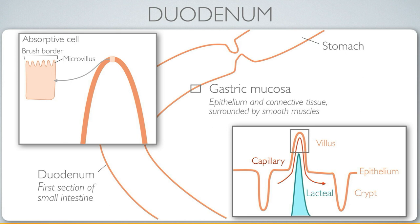There are also endocrine cells that function as sensory cells and integration centers for the release of digestive hormones. The first challenge for the duodenum is to neutralize the acidic content — and the toxic pepsin — from the stomach, so they don't damage the gastric mucosa.